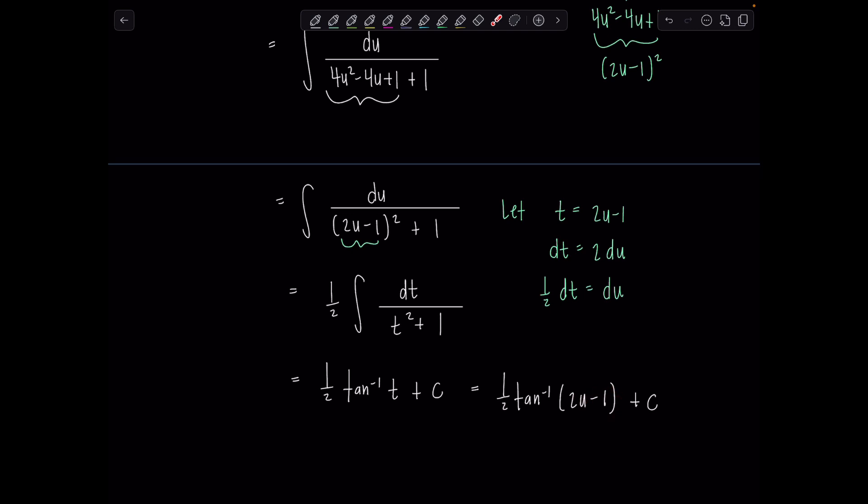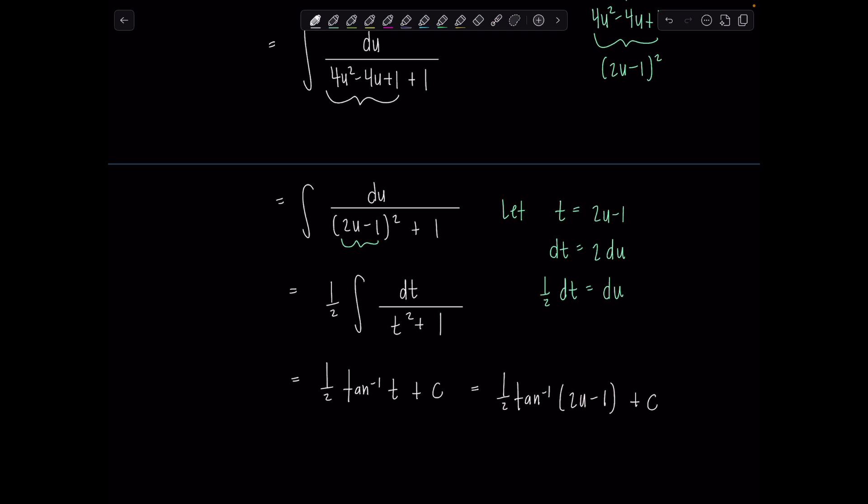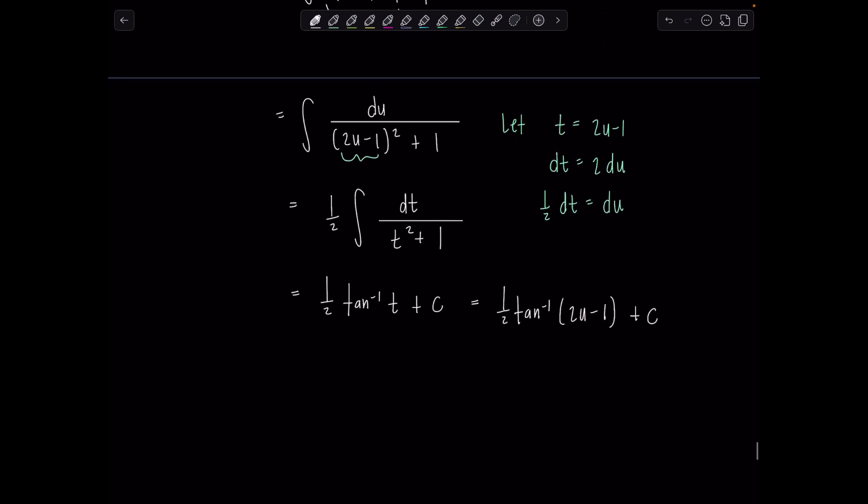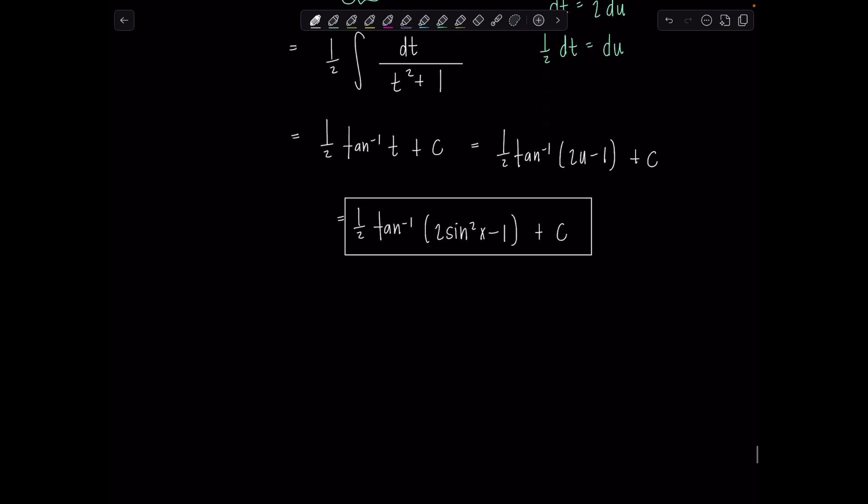And then we're not done because remember our original integral was all in terms of x, u is sine squared x. So this is one-half tan inverse, two sine squared x minus one plus c. Very good. I told you I had another option for you though, right? So option two.